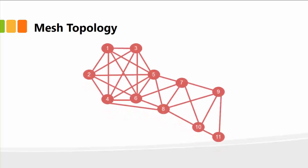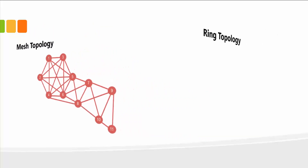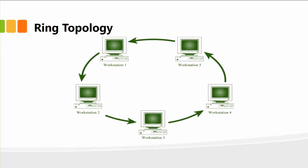The mesh topology is a combination of your star and bus or ring topologies — just a combination of different topologies that you can deploy within your own environment. The ring topology connects a bunch of workstations together to form a ring format where data flows and resources are shared from one node to the other.